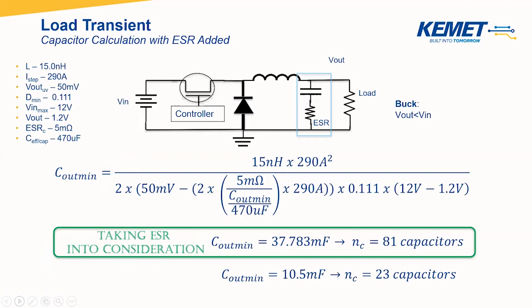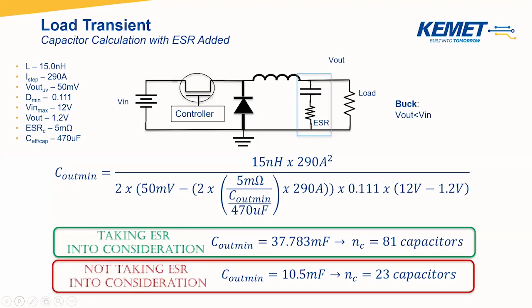This new value gives you about 37.8 millifarads needed. So if you're using 470 microfarad capacitors with 5 milliohms of ESR, you're talking about a total capacitor bank of about 81 capacitors — much more than the original requirement of about 10.5 millifarads and a bank of about 23 capacitors. By taking ESR into account, you need to use more capacitors and a larger bank, which is going to affect your overall system design.